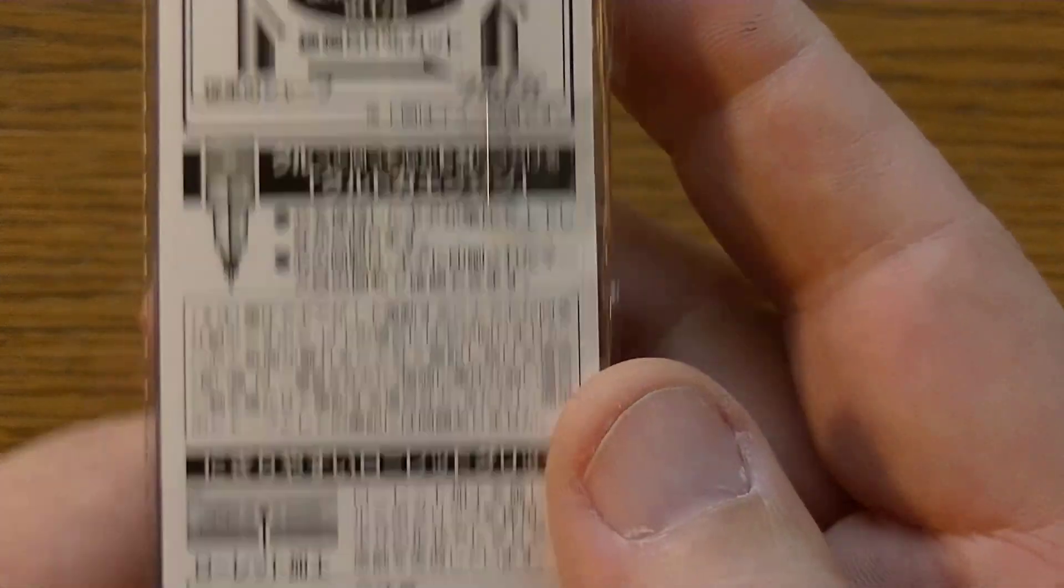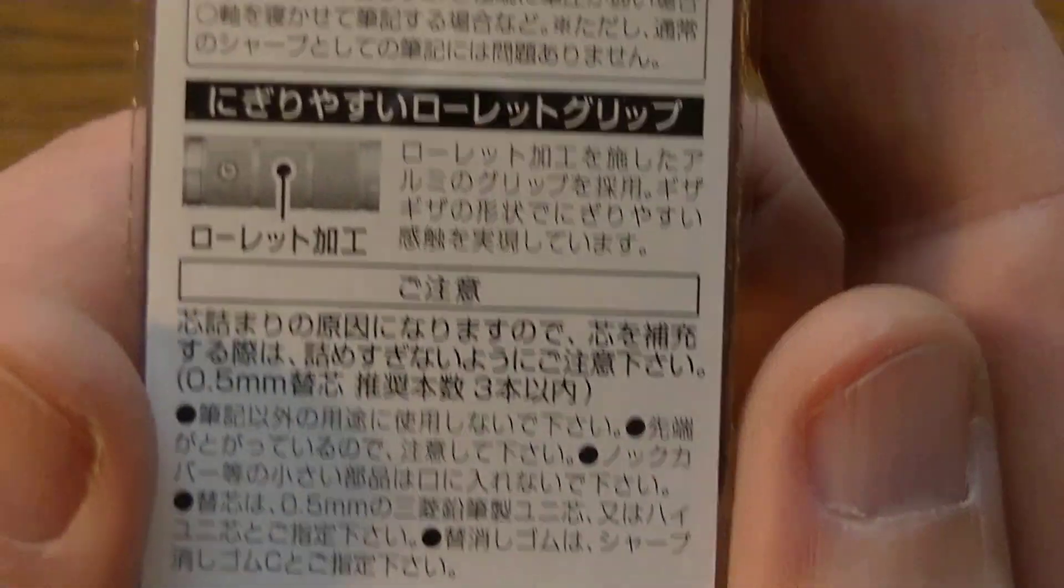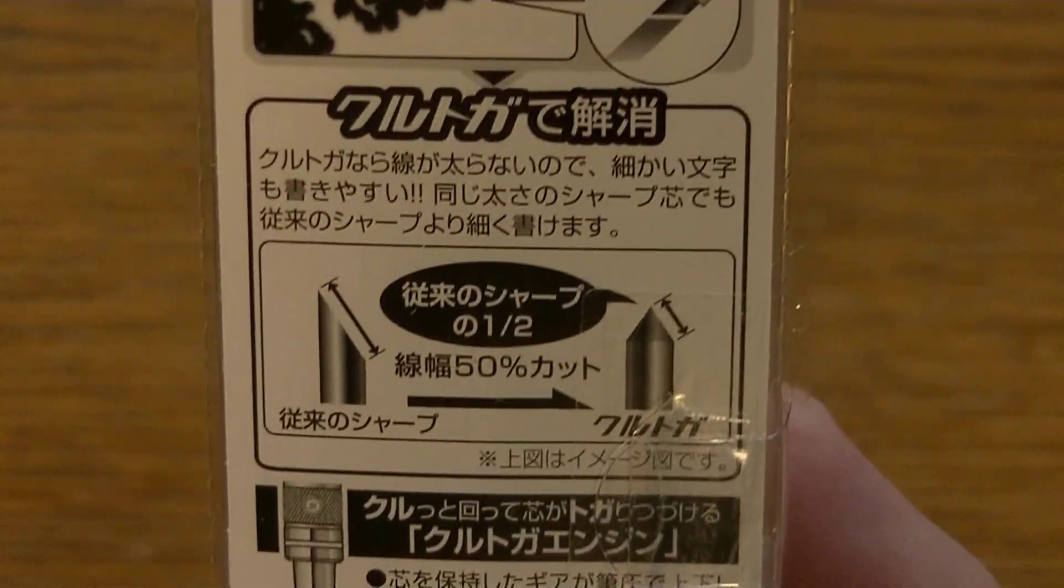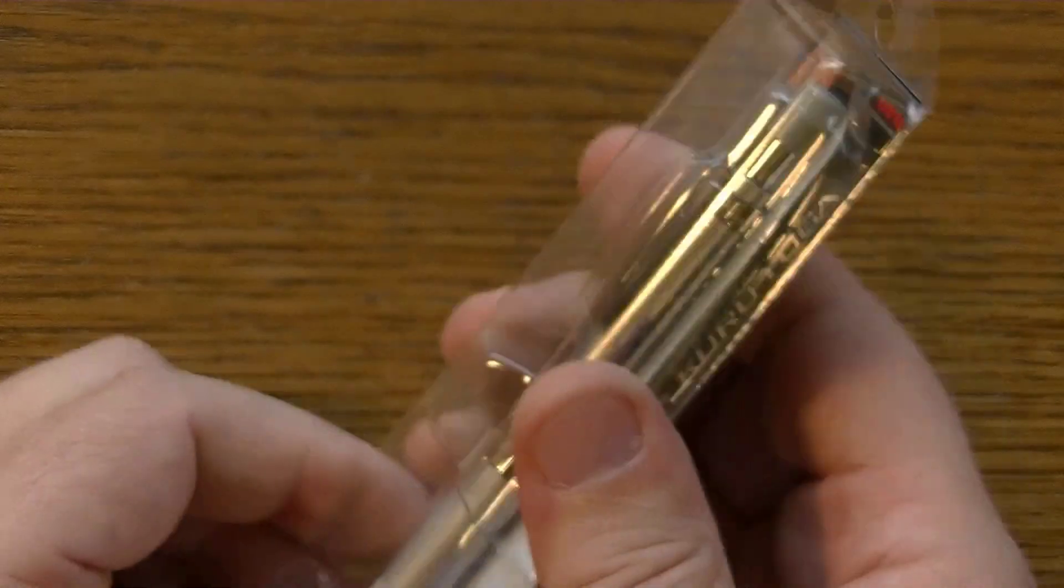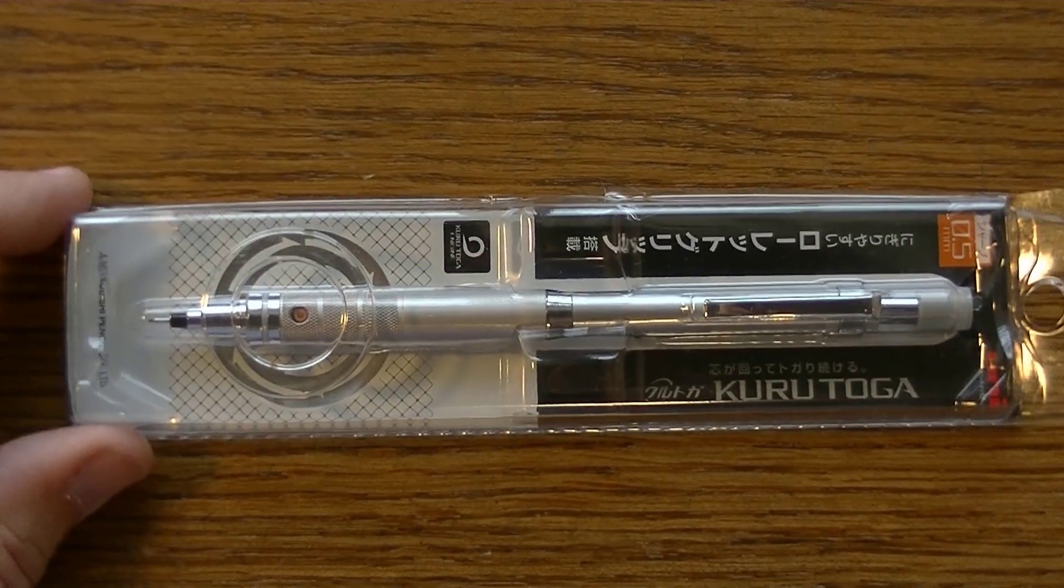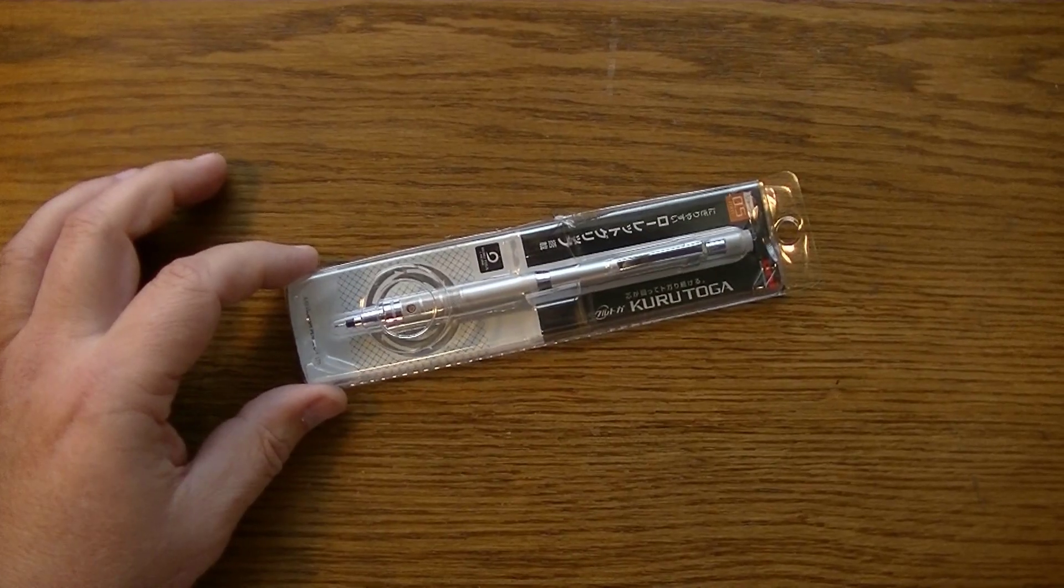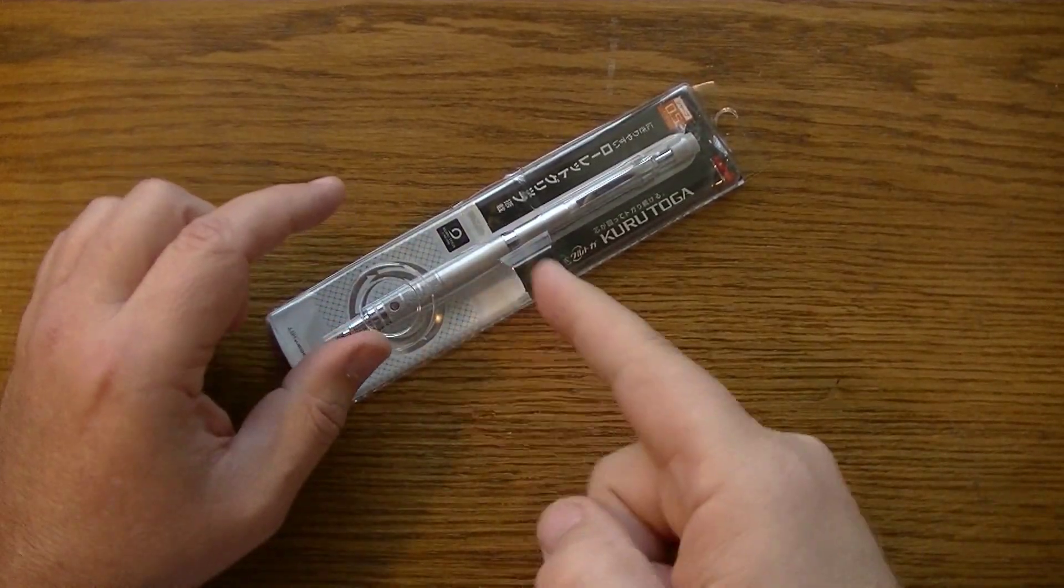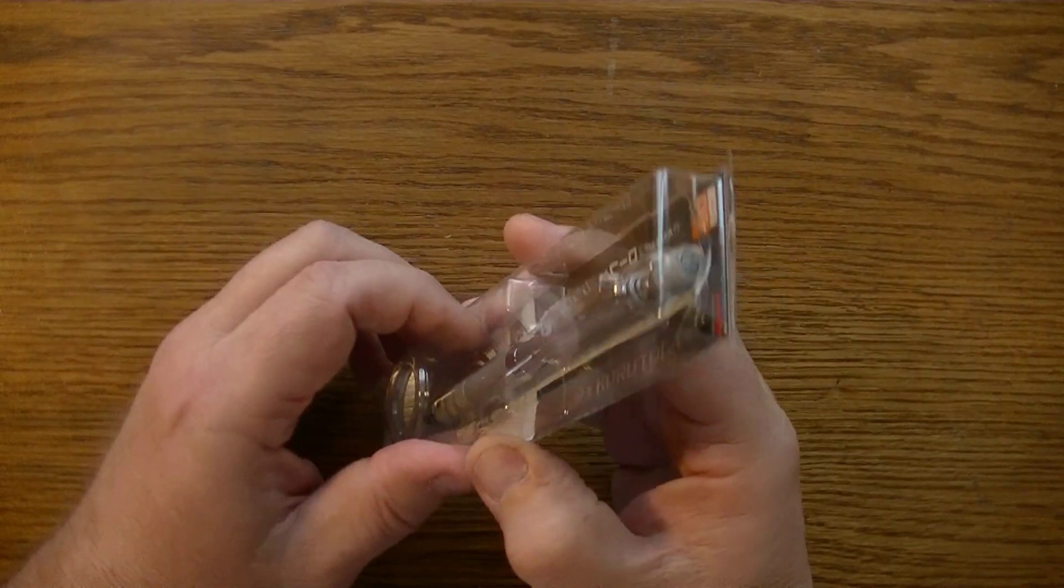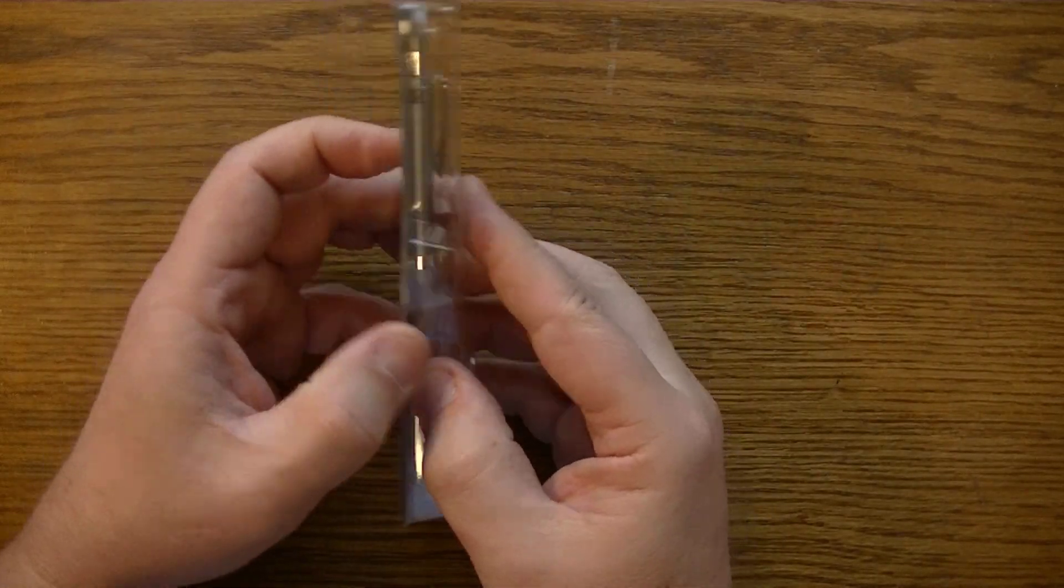The back is all in Japanese so my Japanese is really rusty, but the whole premise of this pencil is that when you write with it the lead should stay sharp as you're writing because the lead will rotate. Let's take a close look at this.